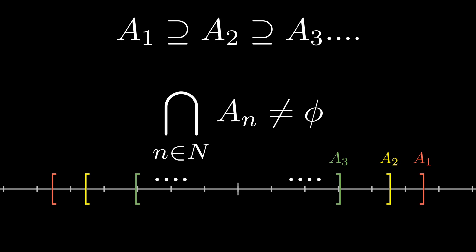Then the infinite intersection of all of those closed intervals is non-empty. This is called the nested interval property. In this video we will prove this property.